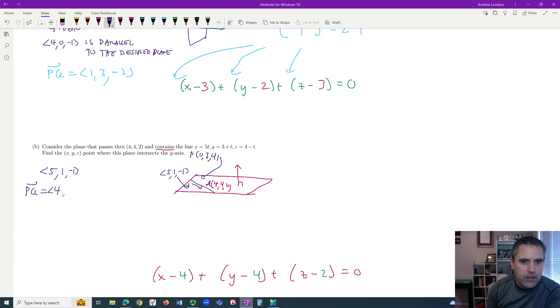PQ is four, one, negative two. And if I was doing a test, I would just do the cross product right there. When you're done, those are your three numbers. Success.